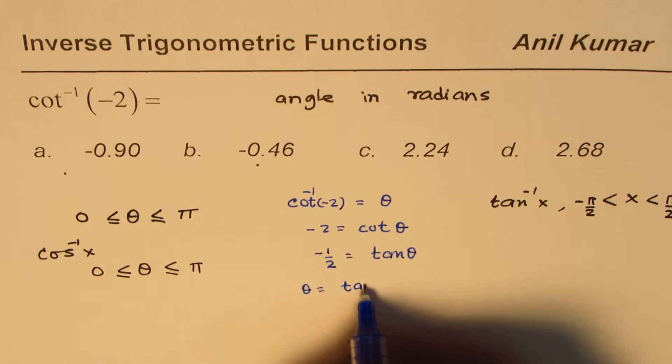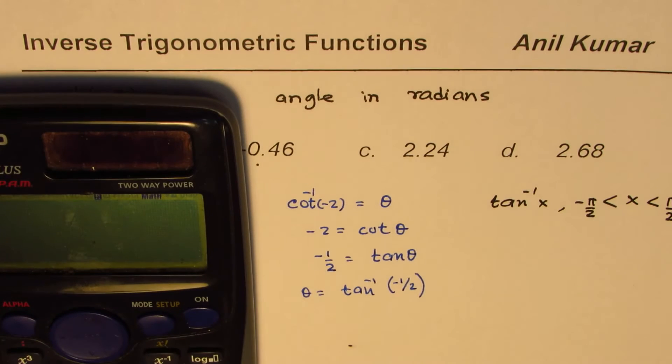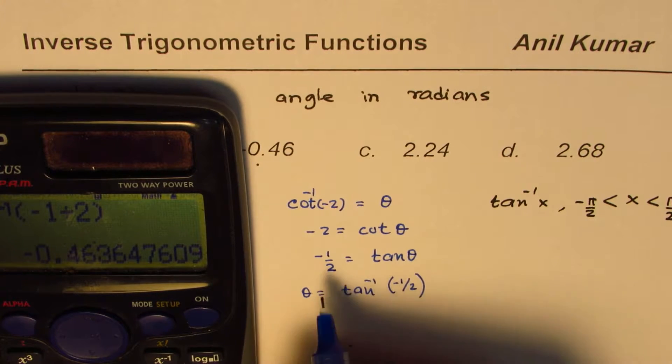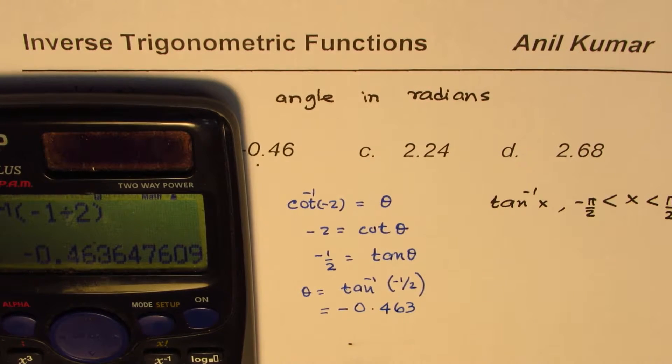So to find theta, we could do tan inverse of minus half. Is that okay? So let us see what do we get from this. So we are doing shift tan inverse minus 1 divided by 2, bracket close, equal to.